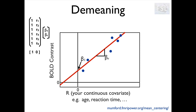Now beta one should represent the mean BOLD contrast of our group, but as you can see beta one in the plot is way below the center of this cloud of points, which should be the group average. This is because our covariate has not been demeaned, and in this case beta one doesn't represent the mean, but a mix of the mean and the intercept of the slope. So you can see that even if the contrast is set up correctly, we would end up with the wrong interpretation of our results.